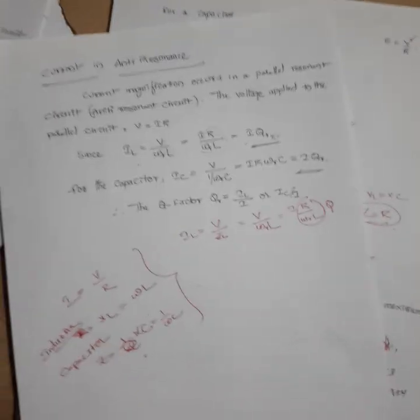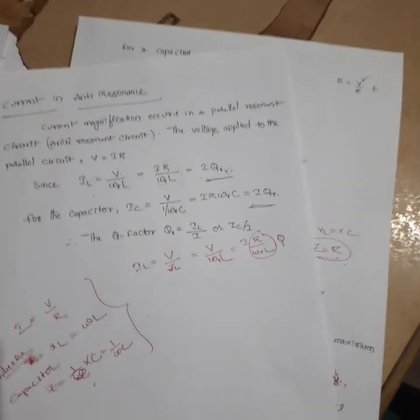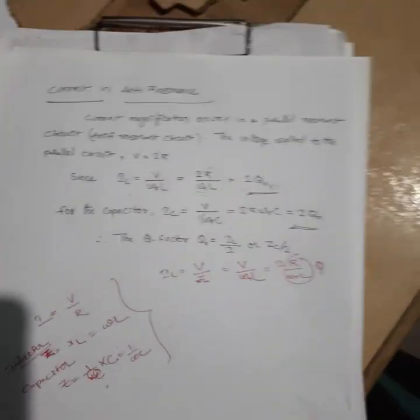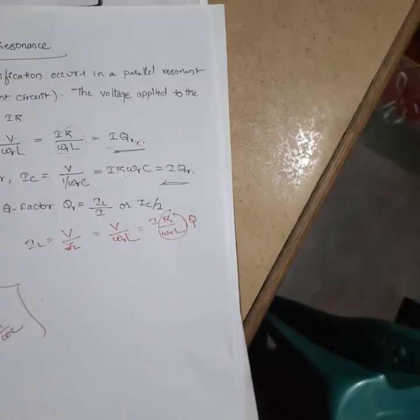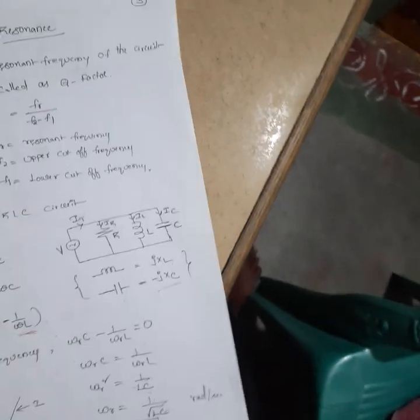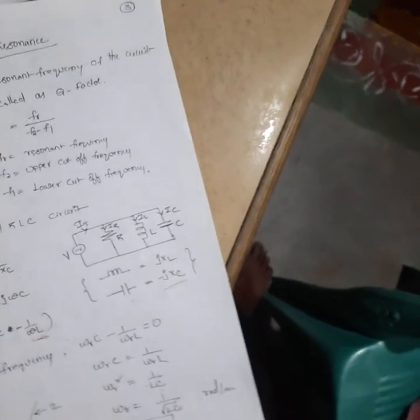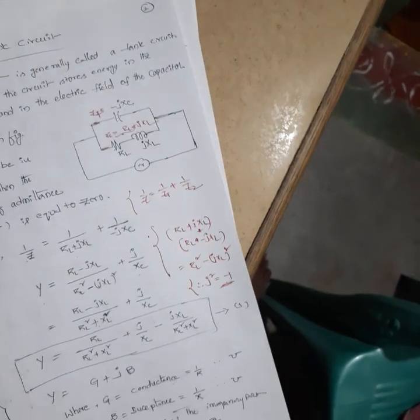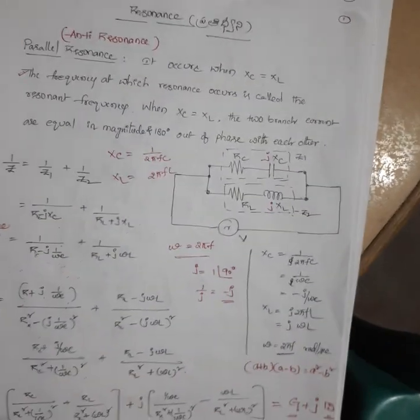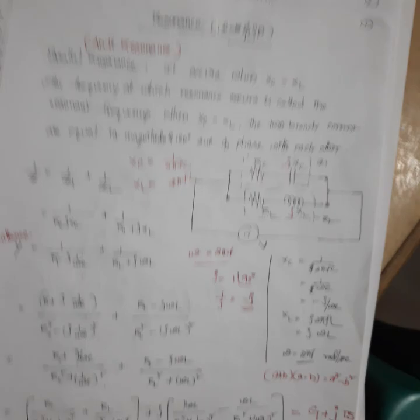In summary, we covered how to calculate parallel resonance for a tank circuit or normal parallel RLC connection, how to evaluate the quality factor of parallel resonance, how to calculate bandwidth, and the difference between bandwidth and quality factor. Thank you.